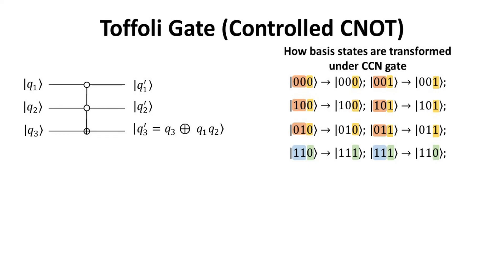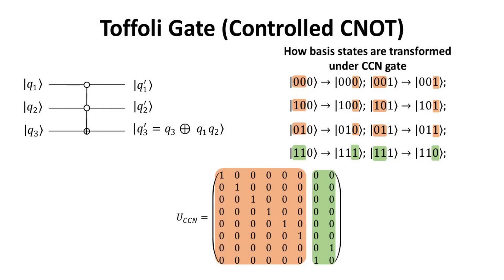However, when both the first qubits are in the 1 ket, the third qubit flips. This is again consistent with the boolean operation of the Toffoli gate. In other words, this means that the first six basis states remain unchanged while the last two are flipped, which gives rise to the following matrix form of the Toffoli gate. Stay tuned and subscribe so you will be notified of our future episodes.